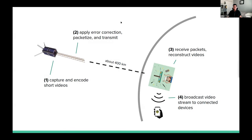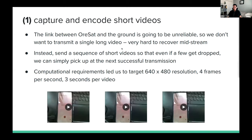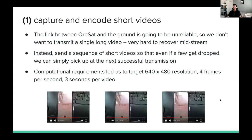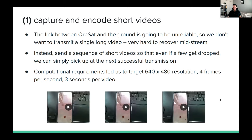Now let's go into more detail about these features. The link between ORSAT and the ground is going to be unreliable — there's no way around that. So we don't want to transmit a single long video because it's very hard to recover midstream, especially on a unidirectional link. Instead, we send a sequence of short videos so that if a few get dropped, we can pick back up at the next successful transmission. The computational requirements led us to target 480p resolution, about 4 frames per second, and about 3 seconds per video.